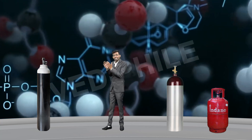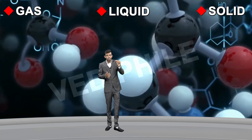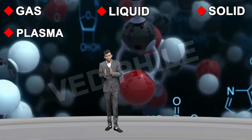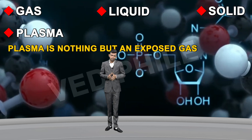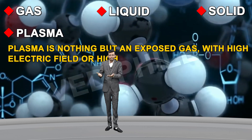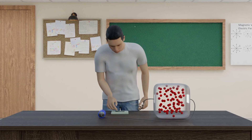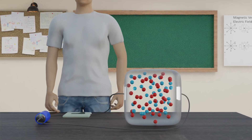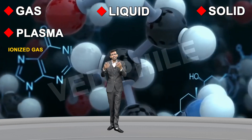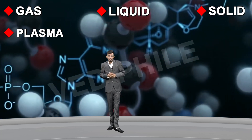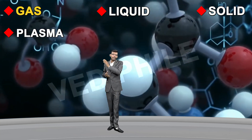So we basically know about three fundamental states: solid, liquid, and gas. But there is one more fundamental state and that is called plasma. Plasma is nothing but an ionized gas — when gas is exposed to a high electric field or high temperature, the atoms get ionized, losing electrons. So we have four fundamental states: solid, liquid, gas, and plasma.